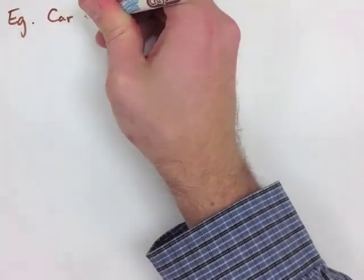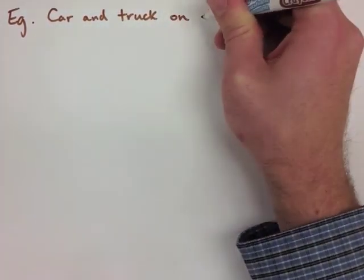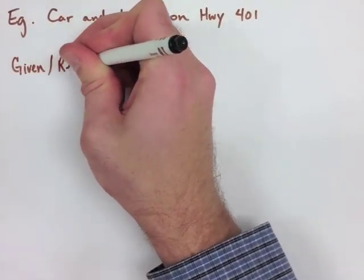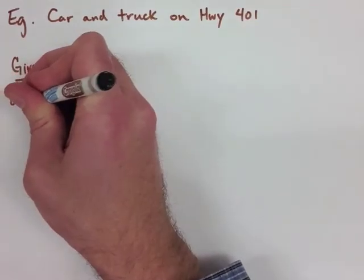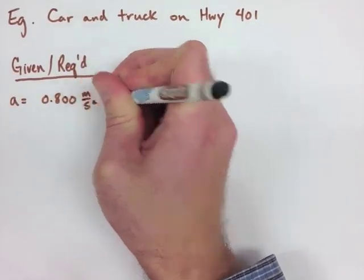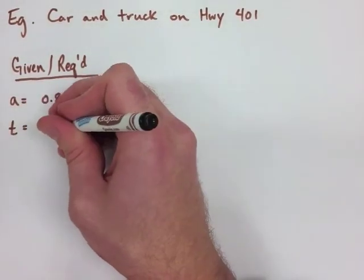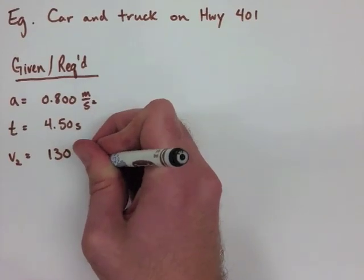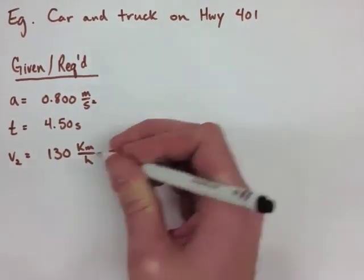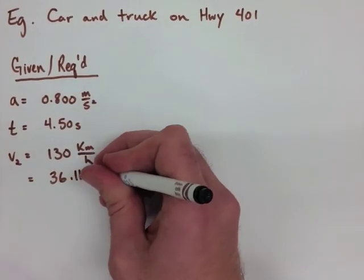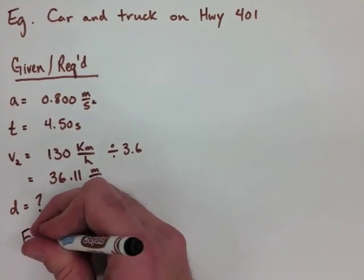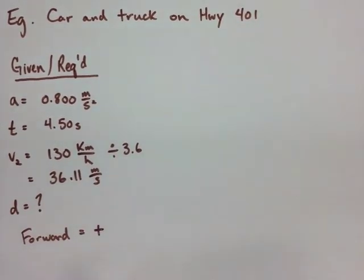Now, let's apply this method to the first example, where we have a car passing a truck on the 401. The first thing we need to do is put down our given and required information. We have an acceleration of 0.8 meters per second squared, a time of 4.5 seconds, and a final velocity of 130 kilometers per hour — which we convert to meters per second, becoming 36.11 meters per second. We don't know our displacement, and that's what we're trying to find. We've established that forward is our positive direction.